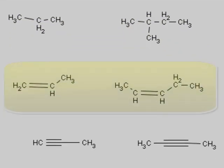The two compounds in the middle of the screen are called alkenes. Alkenes can be distinguished because they have at least one carbon-carbon double bond.